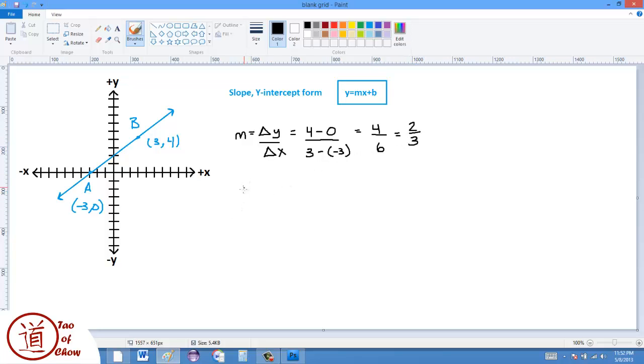And what that means is that for every time the graph moves across 3 units, it's going to move up 2, and so you can see that's actually true. So it goes 1, 2, 3 to the origin, and then 1, 2 up to this point, and then we go 1, 2, 3 across, and 1, 2 up to this point.